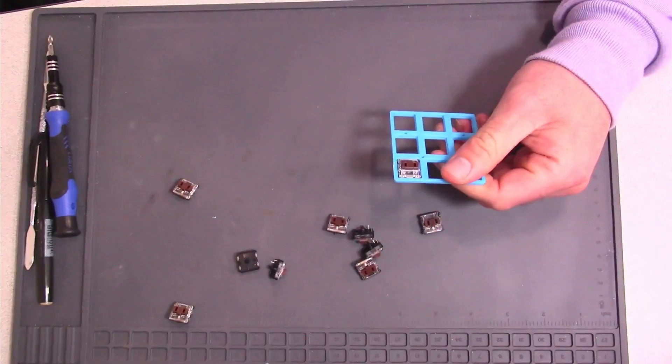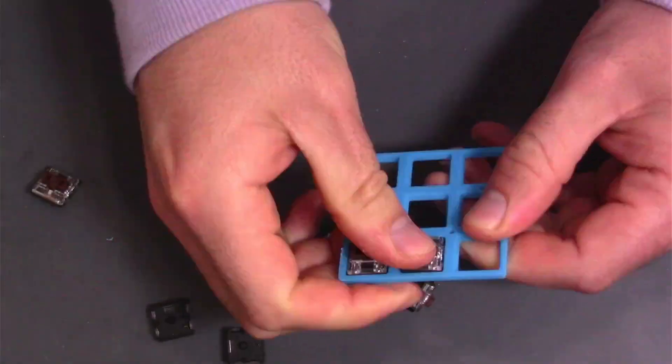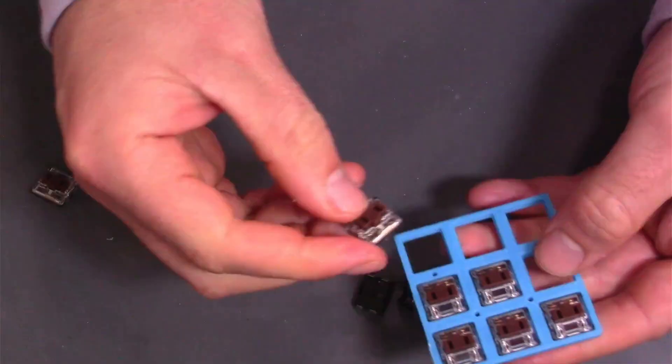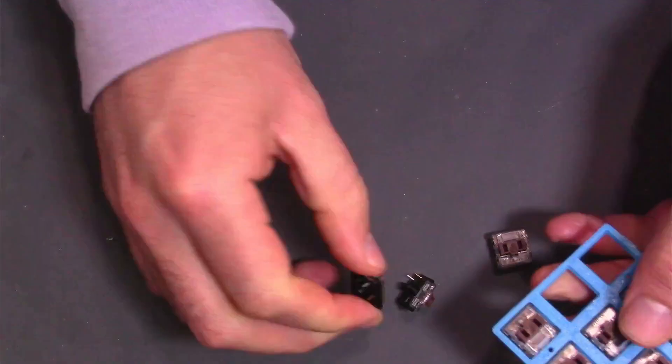I start with the 3D printed frame and I put the key switches into it. I got the file for this from Joe Scotto's GitHub page. I'll link it in the description below.